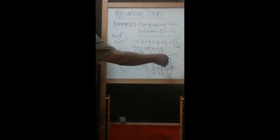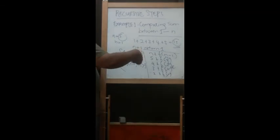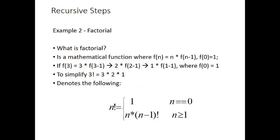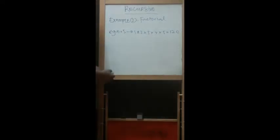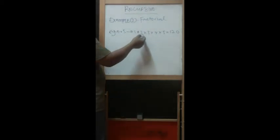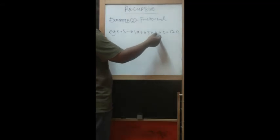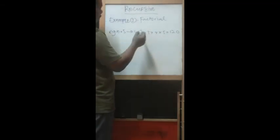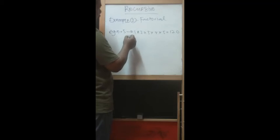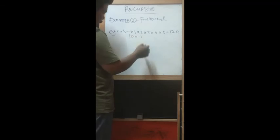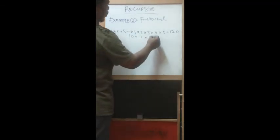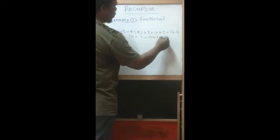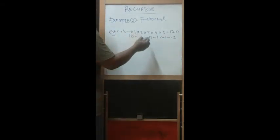This same concept of recursive thinking applies to factorial. Taking n equals five: one times two times three times four times five equals one hundred and twenty. The base case here is factorial of zero equals one, meaning when n equals one we return one.